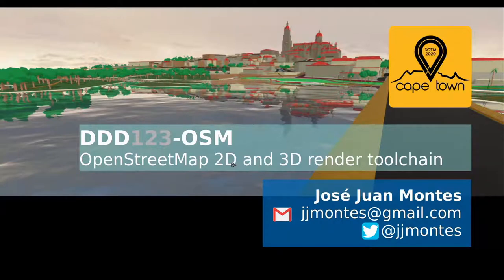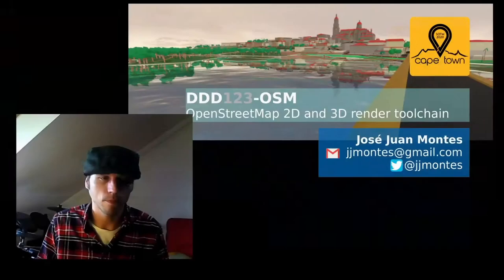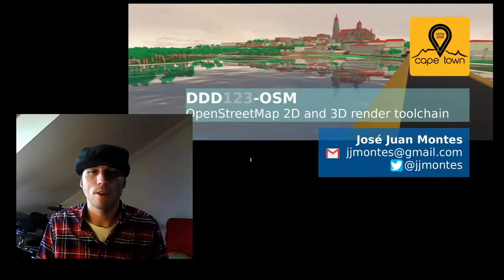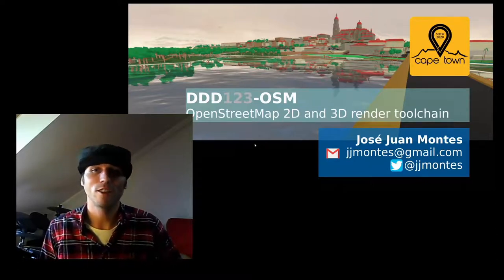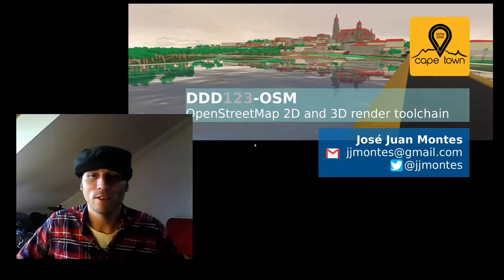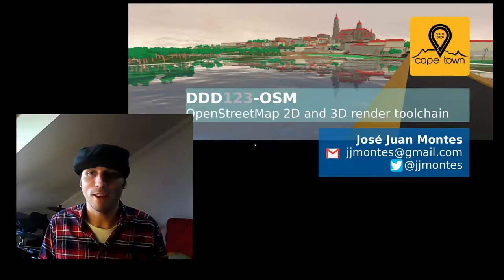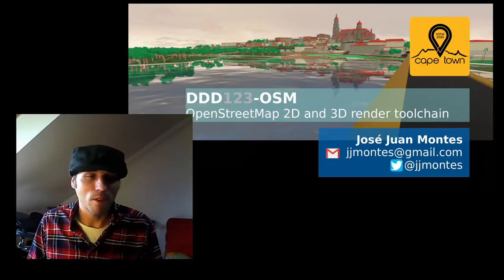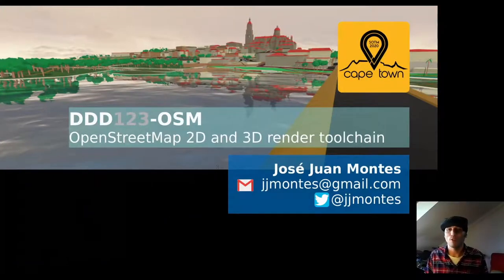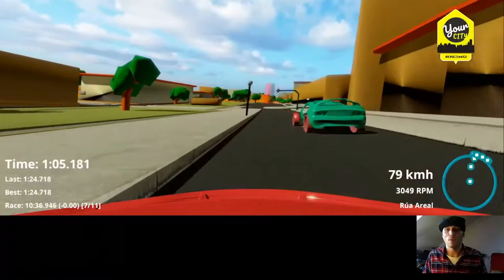Next up, we have Jose Montes with DDD123 OSM, which is a toolset for generating 3D models from OpenStreetMap data. Welcome to this talk — DDD OpenStreetMap 2D and 3D rendered toolchain. My name is Jose Juan Montes. I'm a software engineer from Galicia, Spain, and the developer of the tool I'm introducing today. I've been recently working on a tool that generates 3D models from OpenStreetMap data, and I'd like to share some of the results and the status with you.